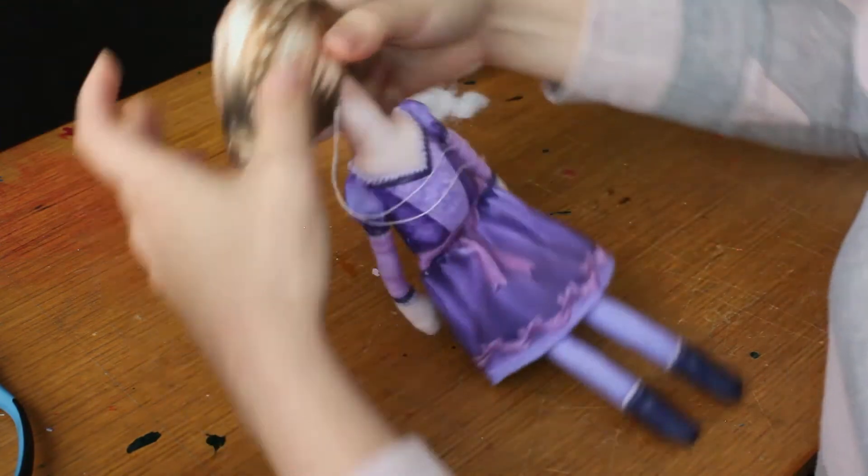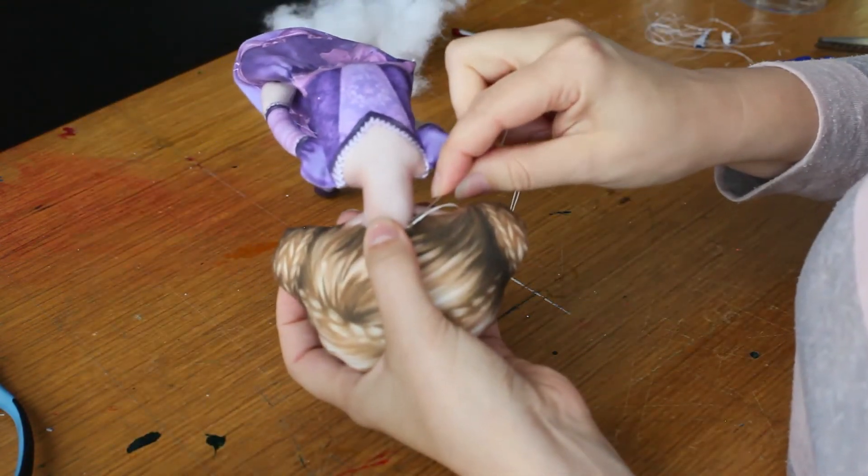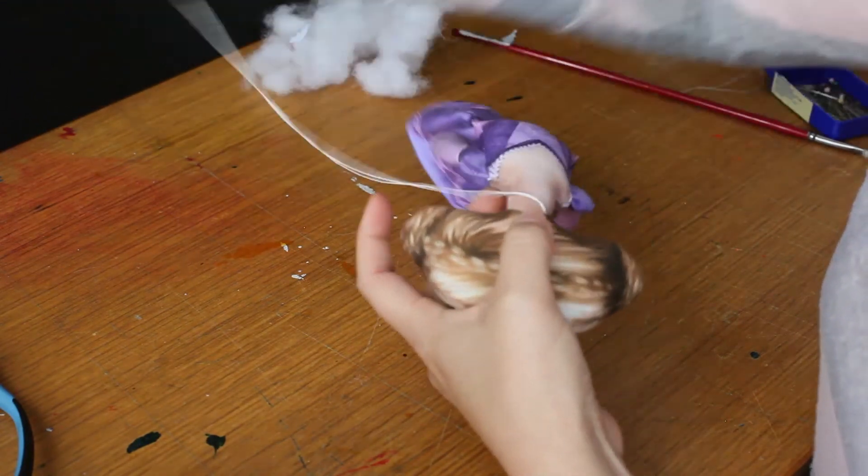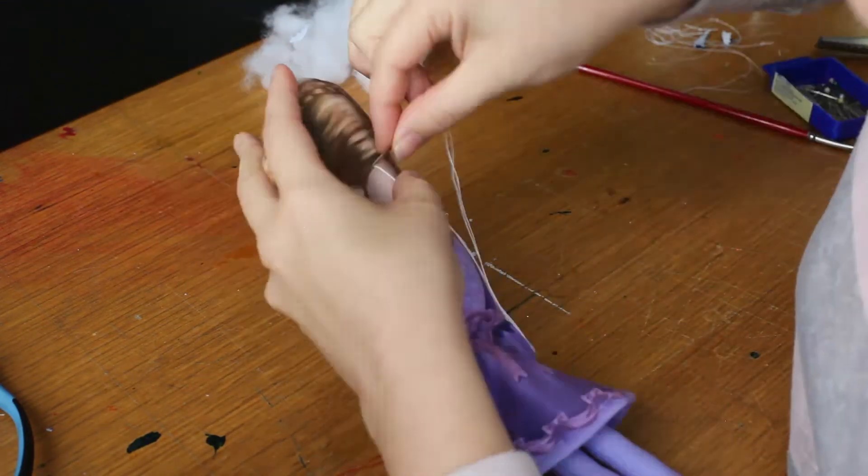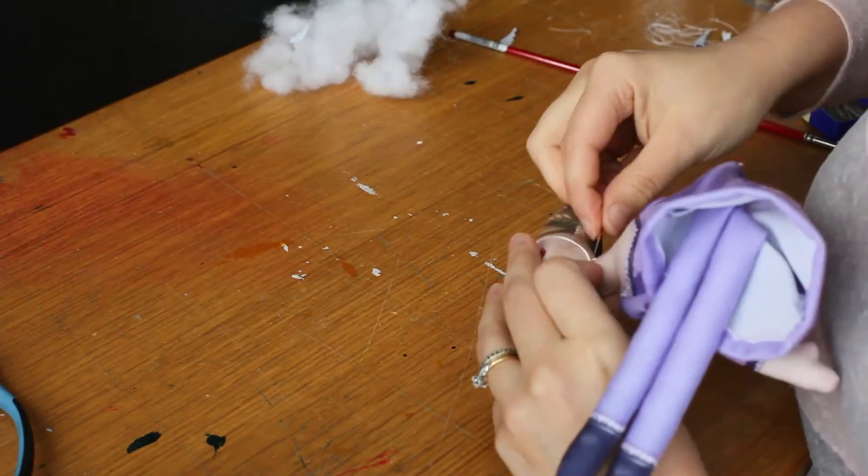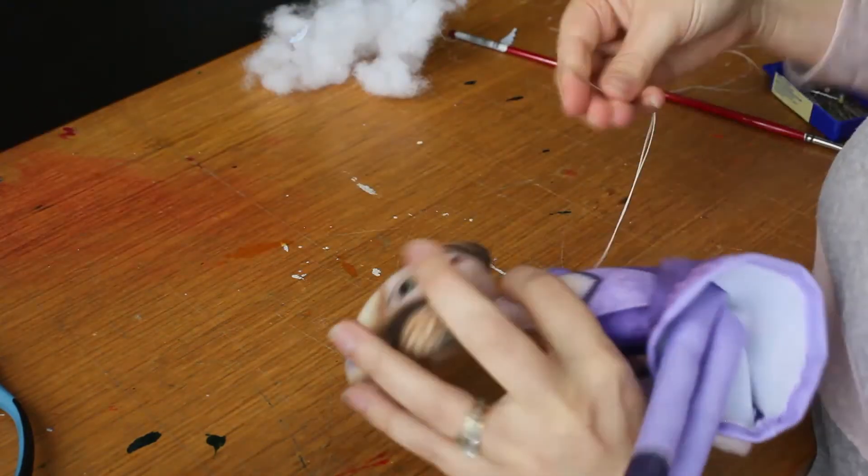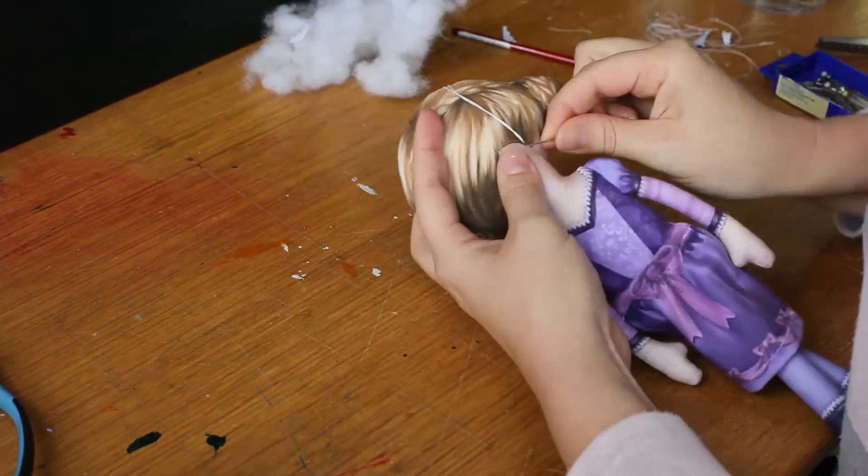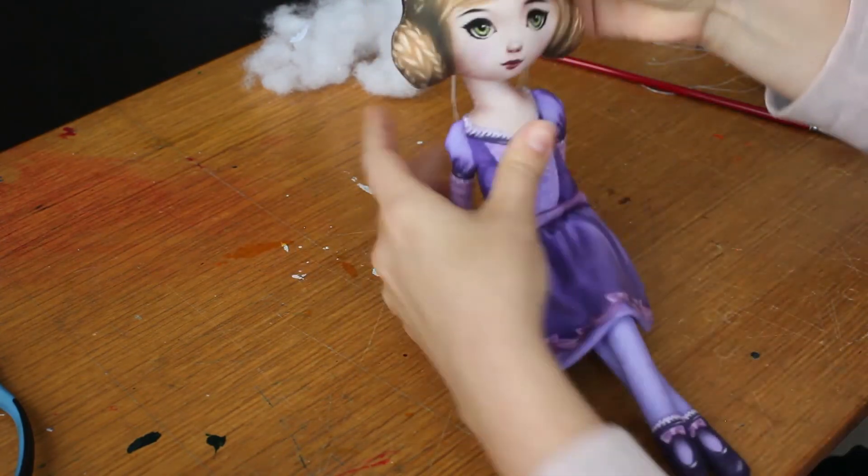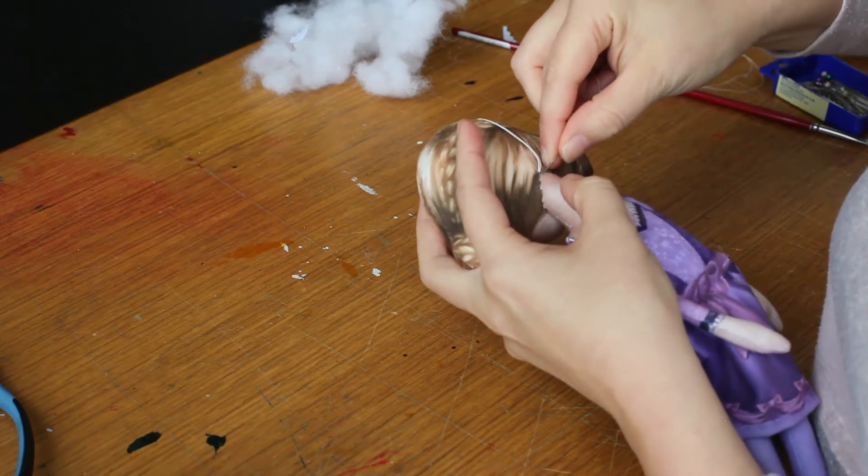Now after I've done a few stitches, I like to go backwards one. This just makes it a little bit stronger. Keeps the stitches pulled in nicely. There you go. That's been sewn all the way around now. I'm happy with the position. So a few more stitches to make sure that's nice and secure.